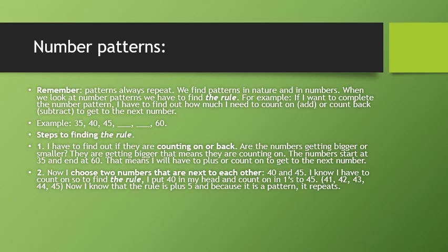Step 2: Now I choose two numbers that are next to each other — 40 and 45. I know I have to count on, so to find the rule I put 40 in my head and count on in ones to 45. We have 41, 42, 43, 44, and 45. Now I know that the rule is plus 5, and because it is a pattern it repeats.